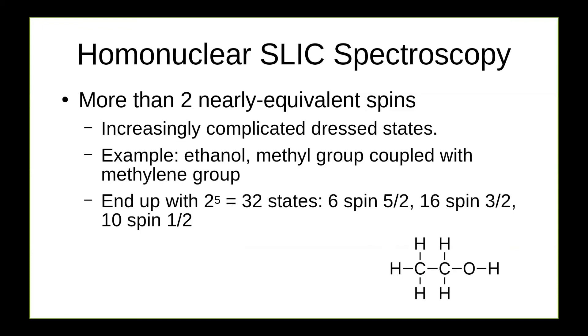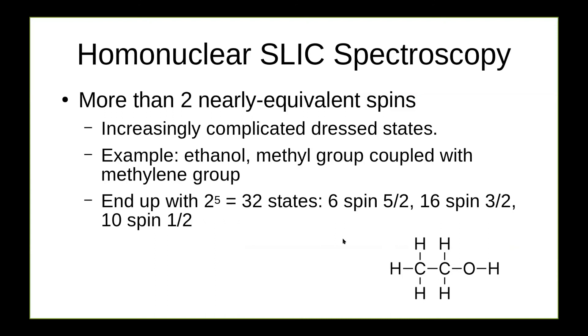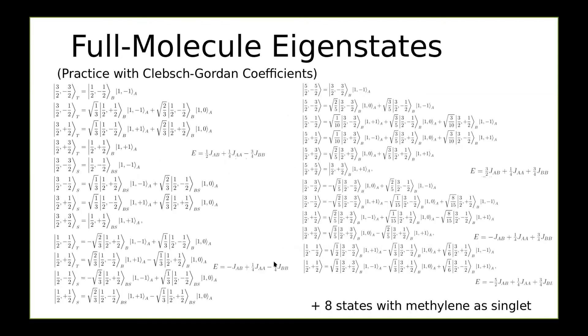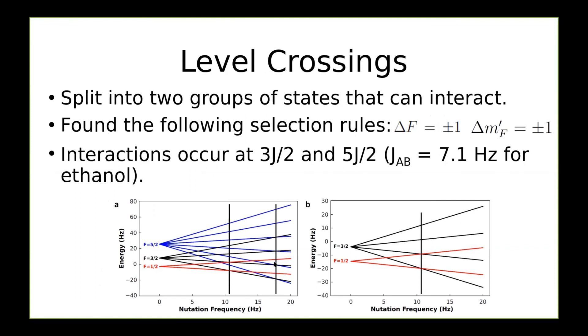I'm going to just mention a second case to be aware of, which is what happens when you have more than two nearly equivalent spins. It starts to get complicated, but it can be all calculated either by hand or preferably via simulation. So for example, if you have ethanol, you end up having 32 spin states, a methyl group, a methylene group, and you can actually calculate what they all are and find where these level crossings now are of the more complex states. So for instance, we end up getting things like five halves, three halves, and one halves stress states.